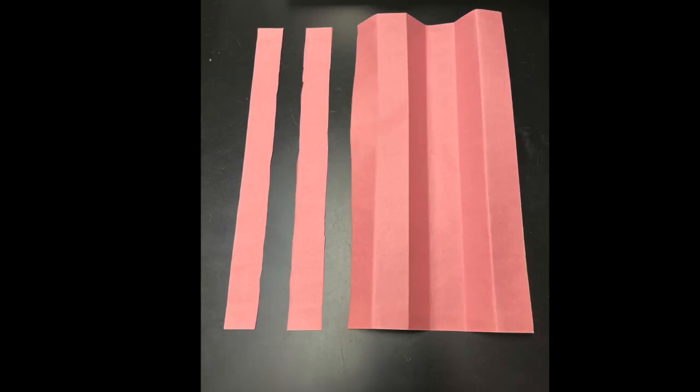Open it up and cut off two strips from the side. Those two strips are going to be your sugar phosphate backbone eventually, but we are going to work on our nitrogenous bases next.